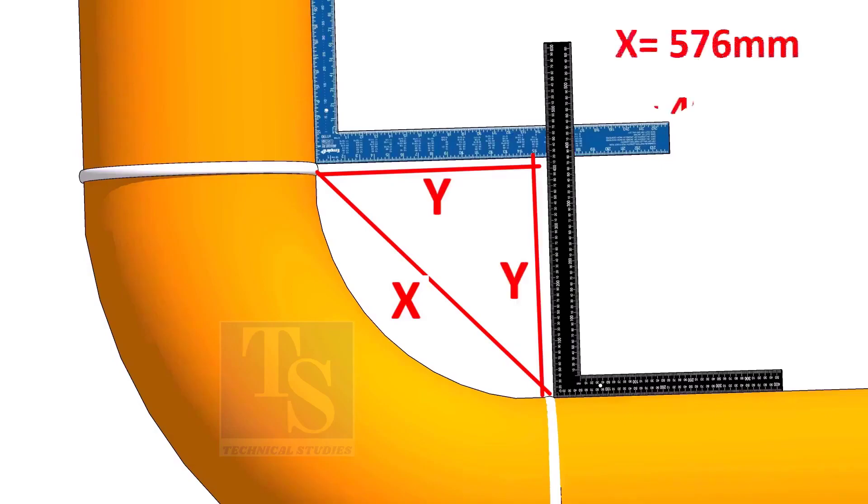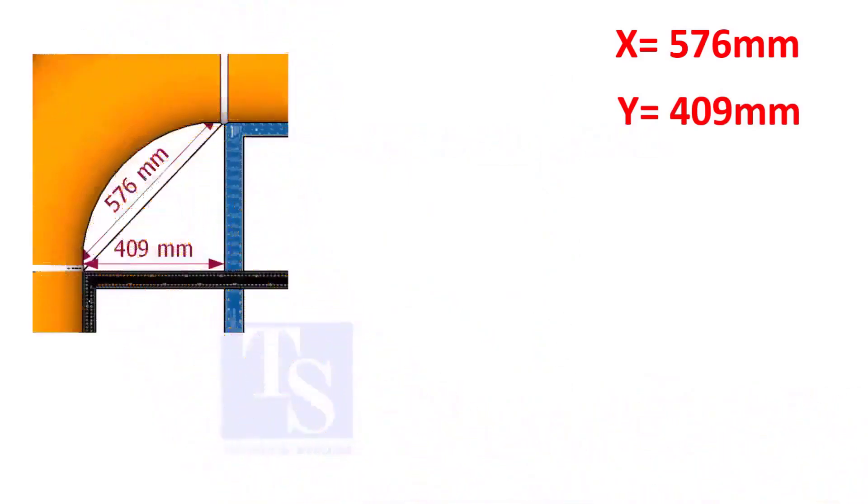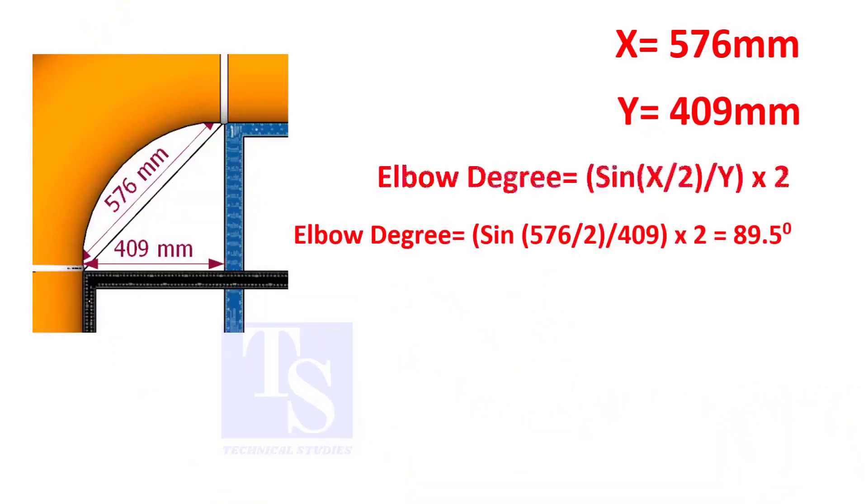Assume that the value of X is 576 and the value of Y is 409 millimeters. Apply the formula. The answer is 89.5 degrees.